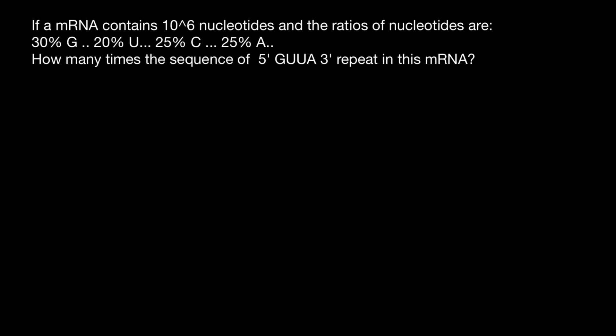If a messenger RNA contains 1 million nucleotides and the ratios of nucleotides are 30% guanine, 20% uracil, 25% cytosine, and 25% adenine, how many times the sequence 5'GUUA3' repeat in this messenger RNA?